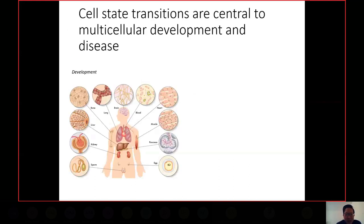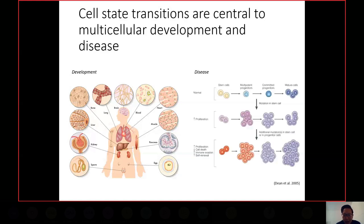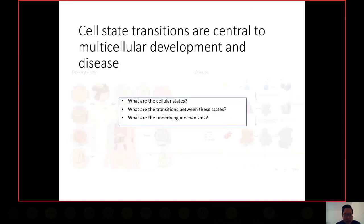In biology, cell state transitions are pretty much central for multicellular development and diseases. What started out as omnipotent stem cells at the beginning can differentiate into a variety of very functionally distinctive cells in your body. This is a very carefully regulated process and any errors in such a process can lead to disastrous effects such as causing cancer.